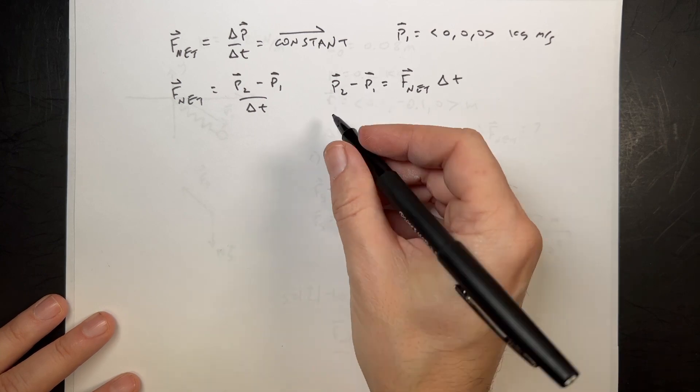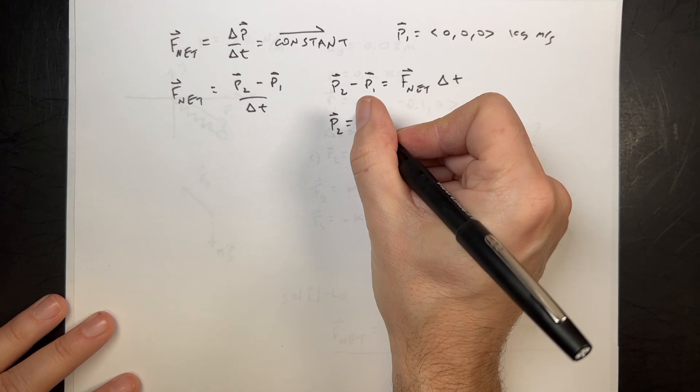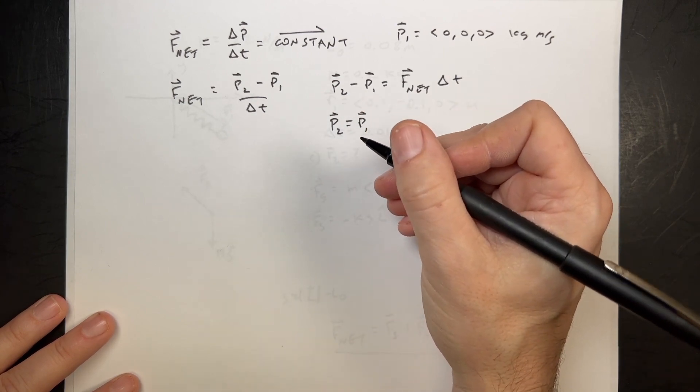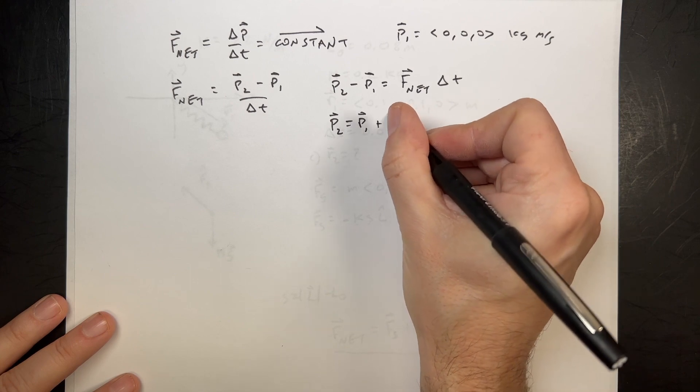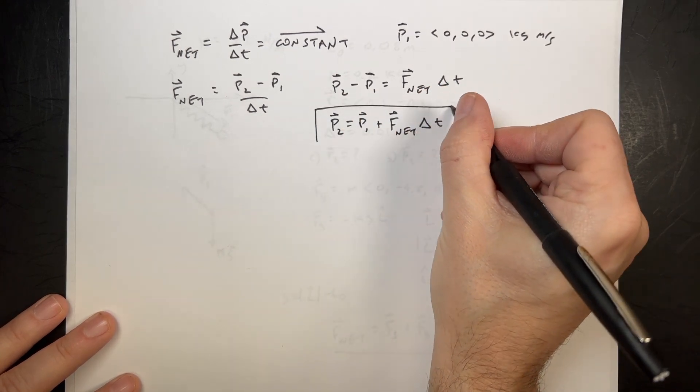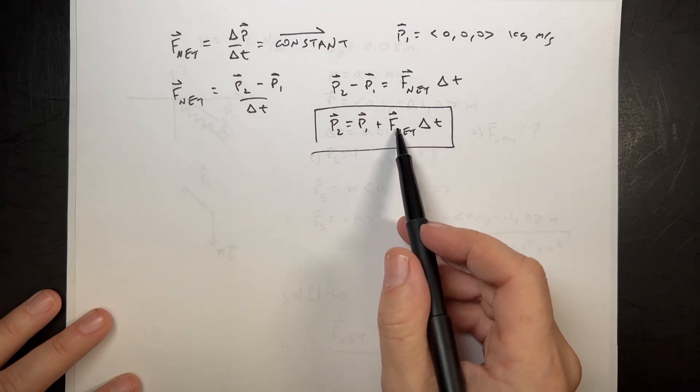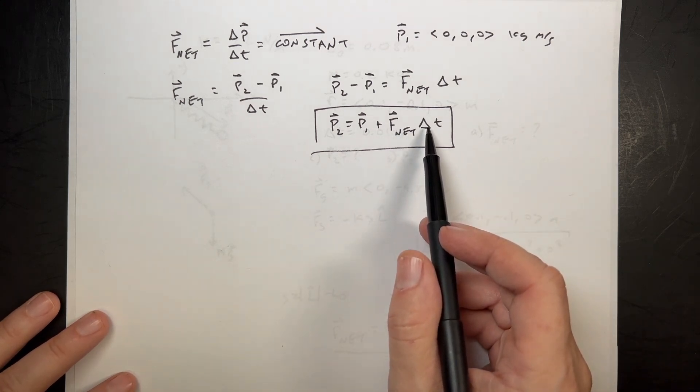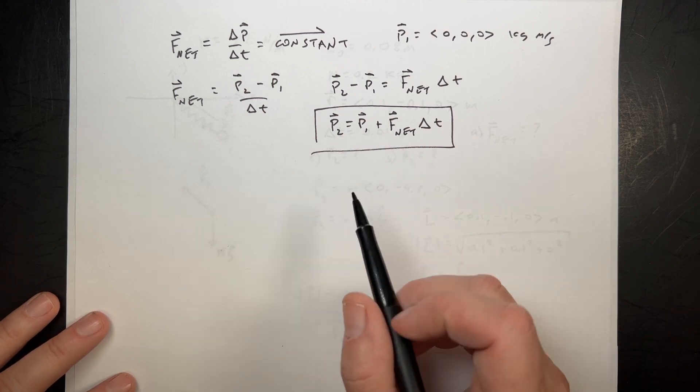So P2 minus P1 is going to be equal to F net, which I calculated, times delta T. I can solve for P2 by adding P1 to both sides. P2 equals P1 plus F net delta T. So I just have to do that operation. I take the net force, which I had, multiply by delta T, so I have to multiply each component by delta T, and add this, which was 0, and I'll have P2.